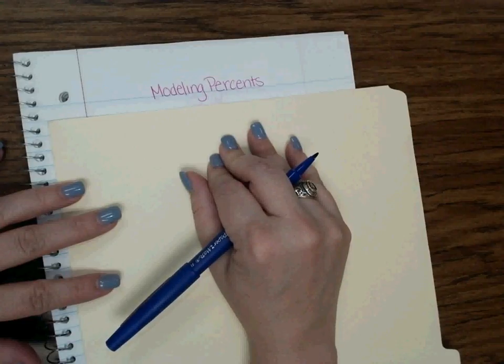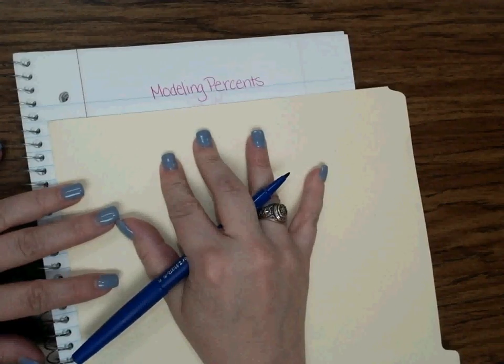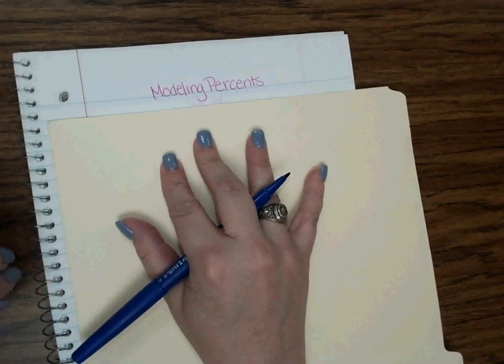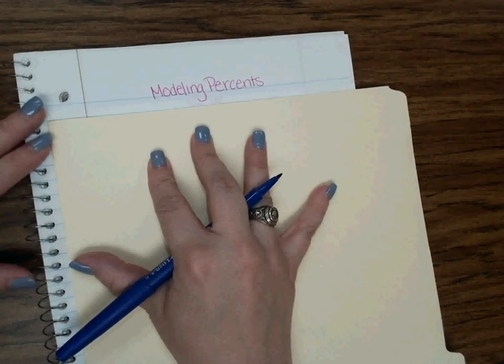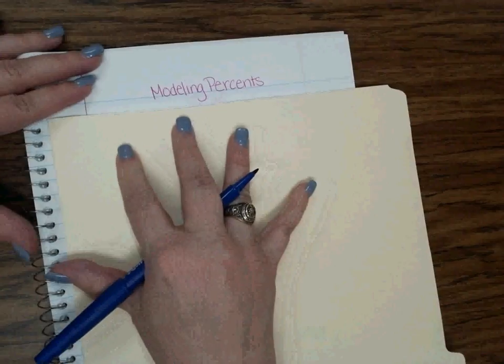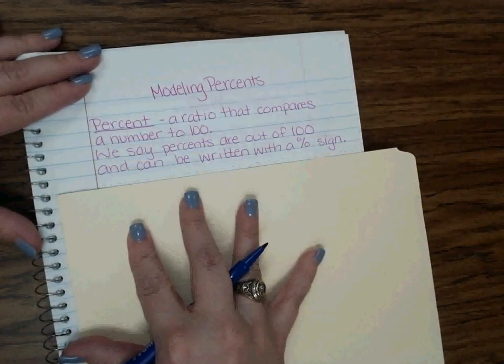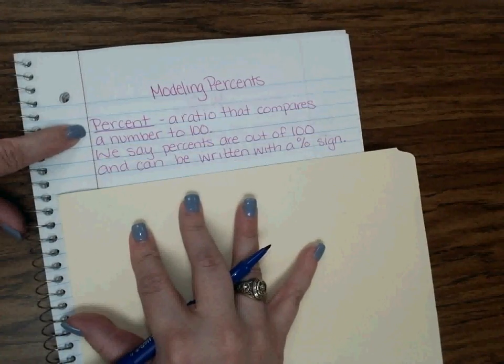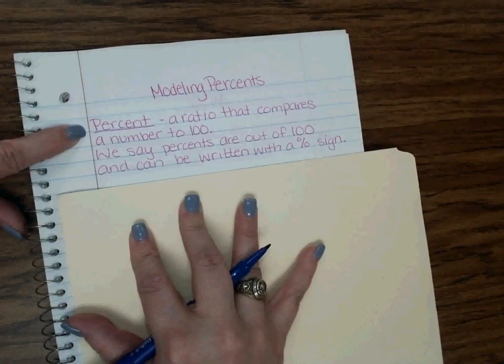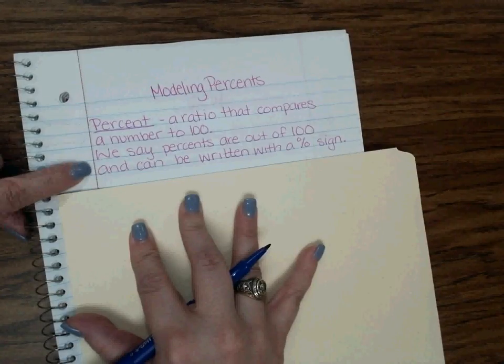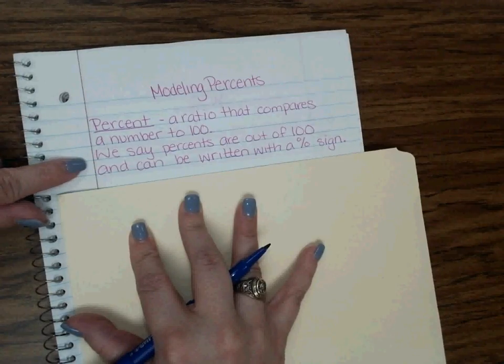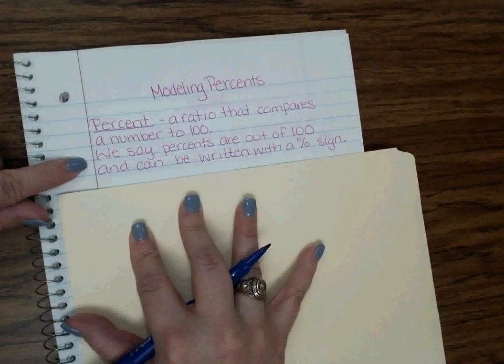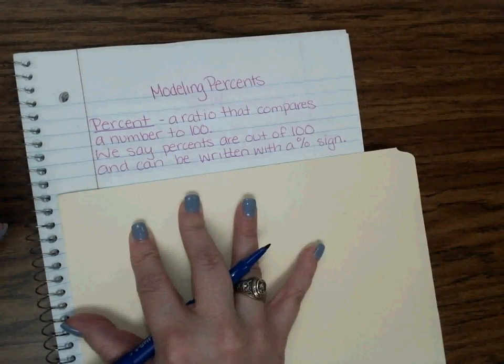So this is what our first interactive notebook page is going to have that has written notes. To start us off we are going to do the definition of a percent. So I have a percent written here. It says a percent is a ratio that compares a number to 100. We say percents are out of 100 and can be written with a percent sign. So it's written down in our notebook. If you need to go ahead and pause the video so that you can write it down yourself and then you can play it again and we'll move on.